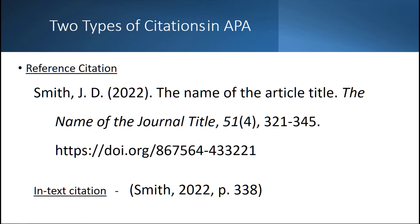The next piece is the title of the journal, which has an entirely different format. Notice that the title of the journal is in italics and all the big words start with a capital letter. At the end of the journal title we have a comma. Next is the volume number — 51 — in italics. Next is the issue number, 4, in parentheses right next to 51, with a comma after the parenthesis. Next is the page number range. You must have a range, so our first page is 321 and the last page is 345, with a period after the page number range.